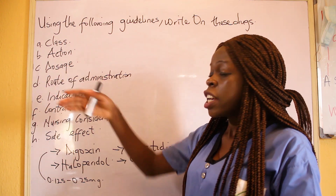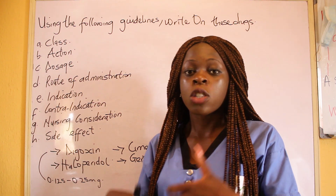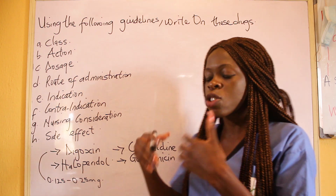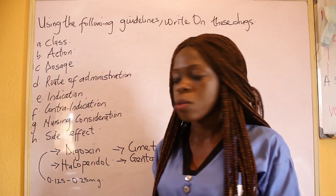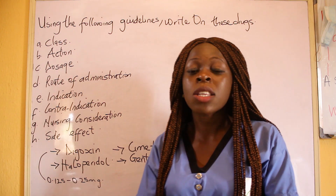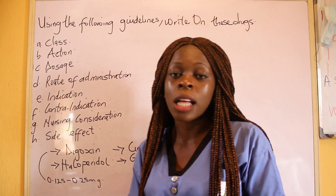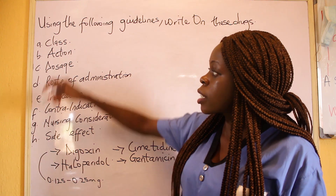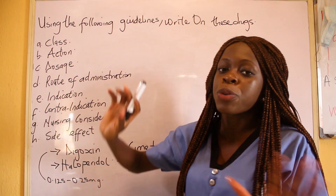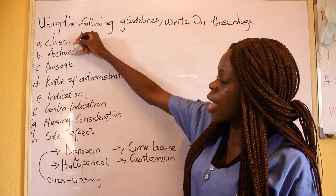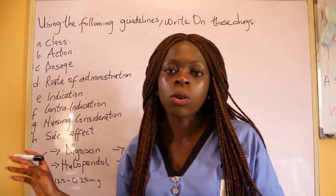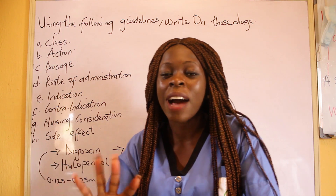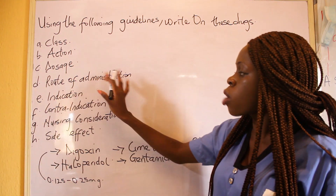Then dosage — it depends on the situation. It could be for atrial fibrillation; it depends on what is going on. You can have 0.125 mg to 0.25 mg, depending on what you are being treated for, and sometimes 0.5 mg can be given. So you might be stuck on this — class, action, dosage are each half mark, so one and a half marks are already gone if you don't know them.